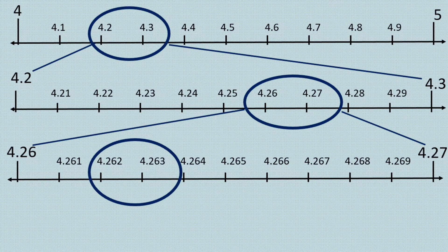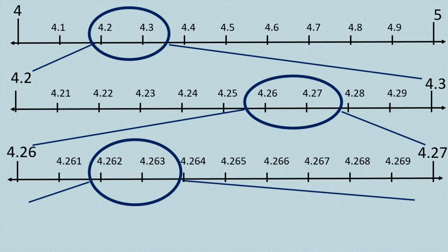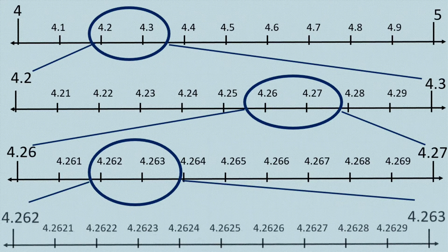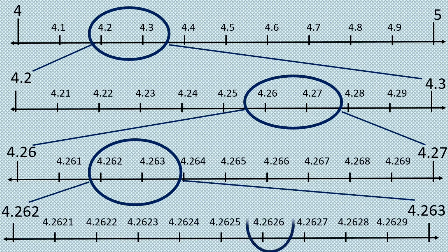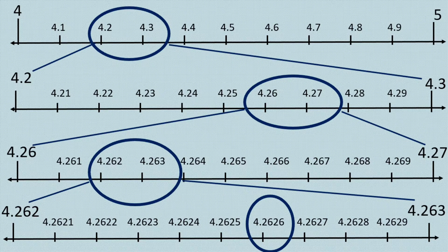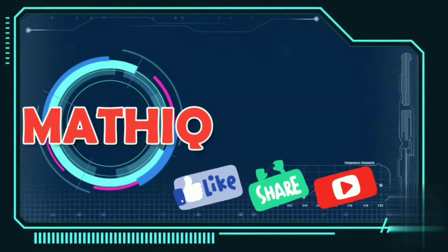Finally, dividing the number line into 10 subdivisions, we visualize the given number 4.2626 between 4.262 and 4.263.